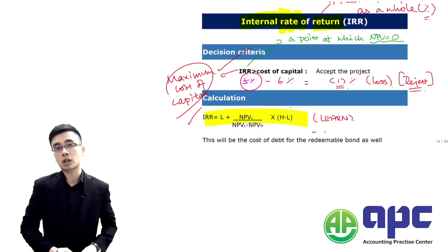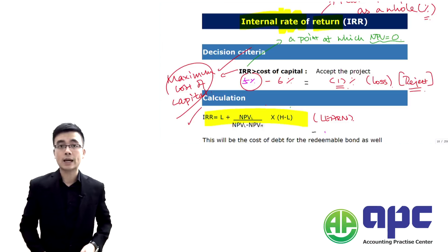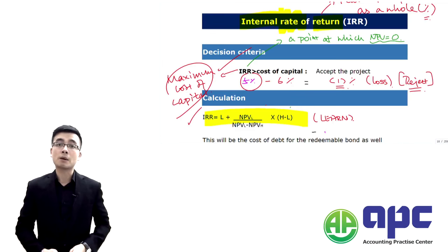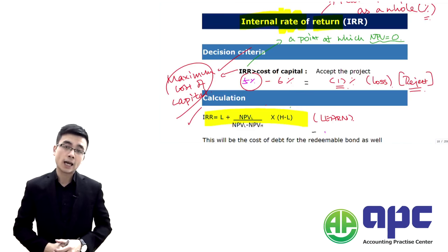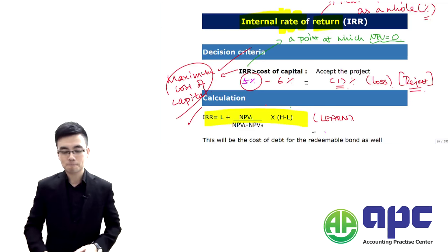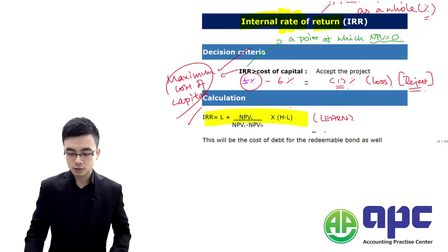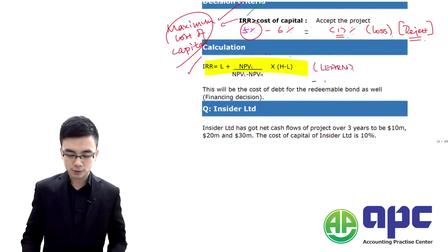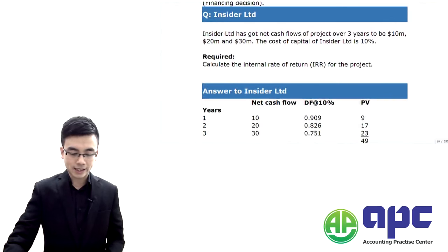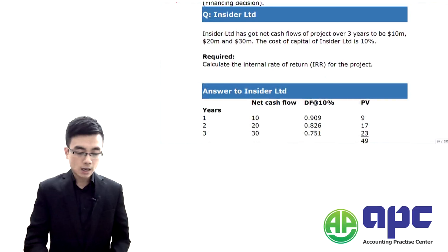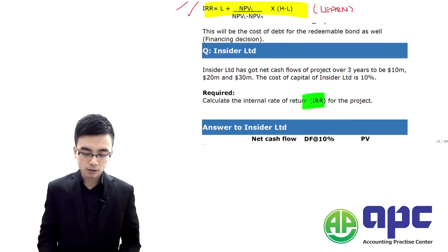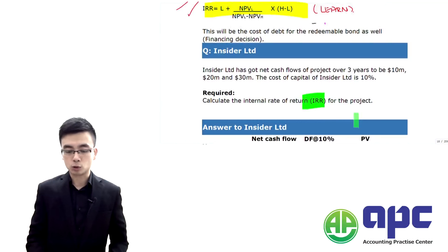So let's apply the calculation to a practical case. We can see how to calculate this in the exam before we talk about any of the discursive parts related to IRR. Let's have a go at the question called Insider Limited. The required task is to calculate the IRR for the entire project — the return from this project overall.